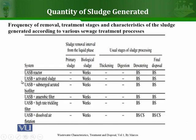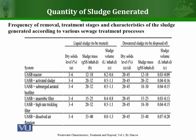Moving on to UASB reactors — we are not going to discuss all these reactors in detail, but in these reactors biological sludge is produced. It is almost continuously removed after weeks and is not stored for longer periods of time. The biological sludge produced is passed through the dewatering process before final disposal, and these are the parameters of UASB reactors and their derivatives.